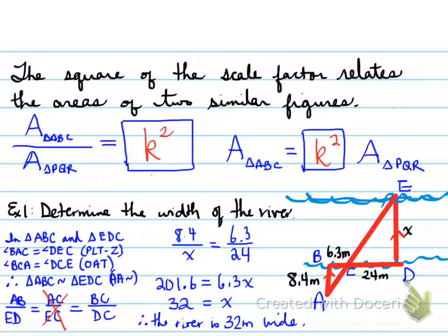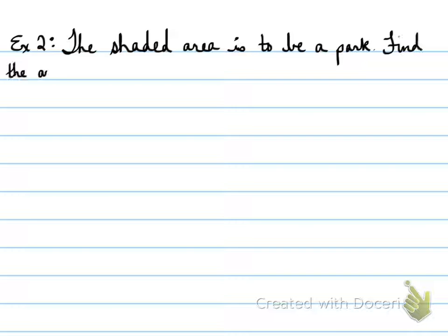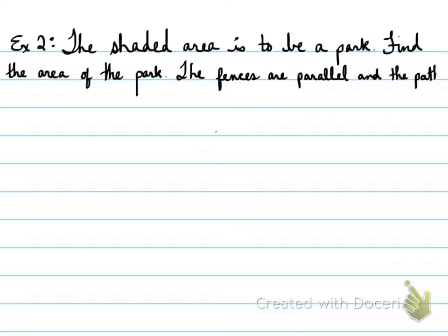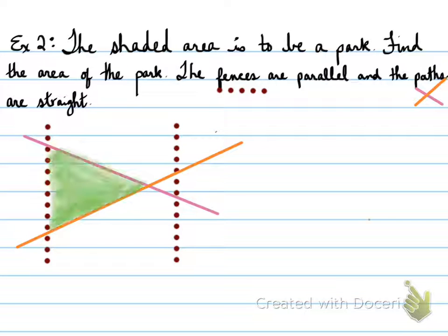All right, take some time to look at that. We're going to continue. Here we go. Example number two. The shaded area is to be a park. Find the area of the park. The fences are parallel, and the paths are straight lines. So it's very important for us to note these.